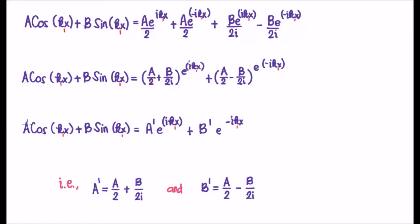And that's it. This means that if you have a linear combination of cosines and sines a cos k sub 1 x plus b sine k sub 1 x, they are equivalent to a linear combination of complex exponential functions e to the i k sub 1 x and e to the minus i k sub 1 x.